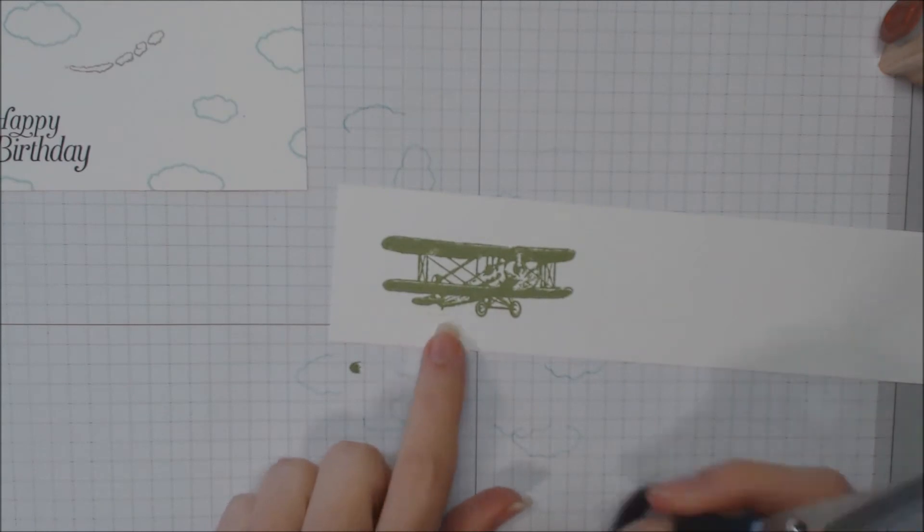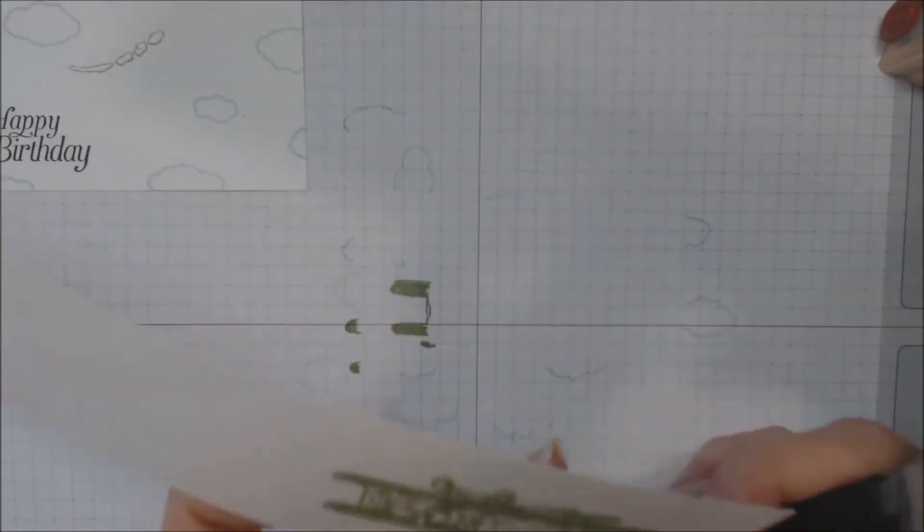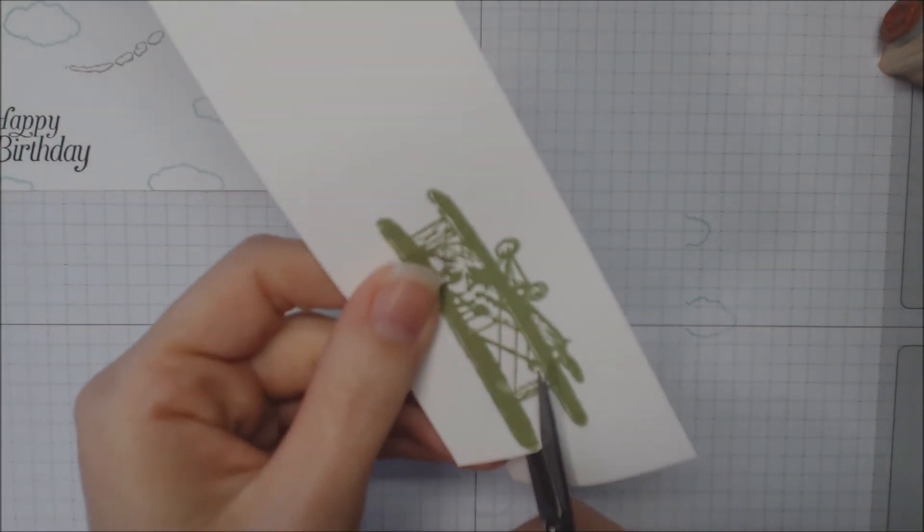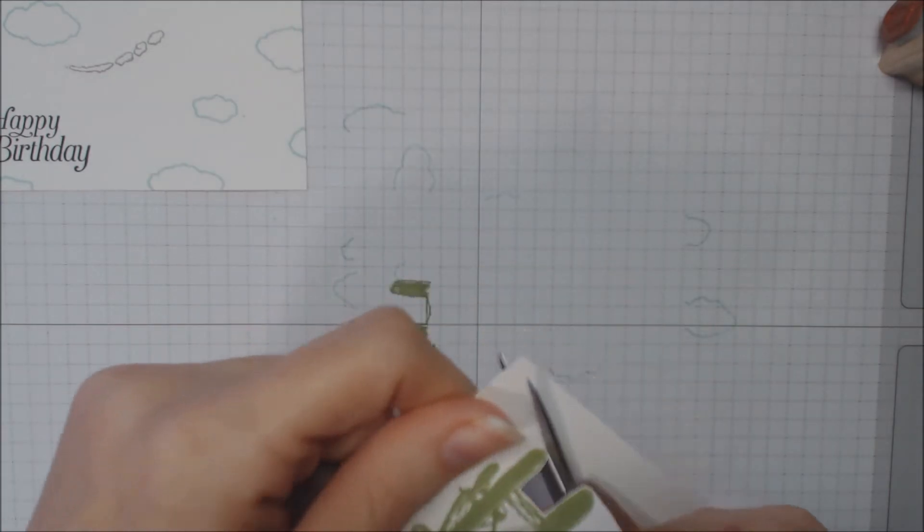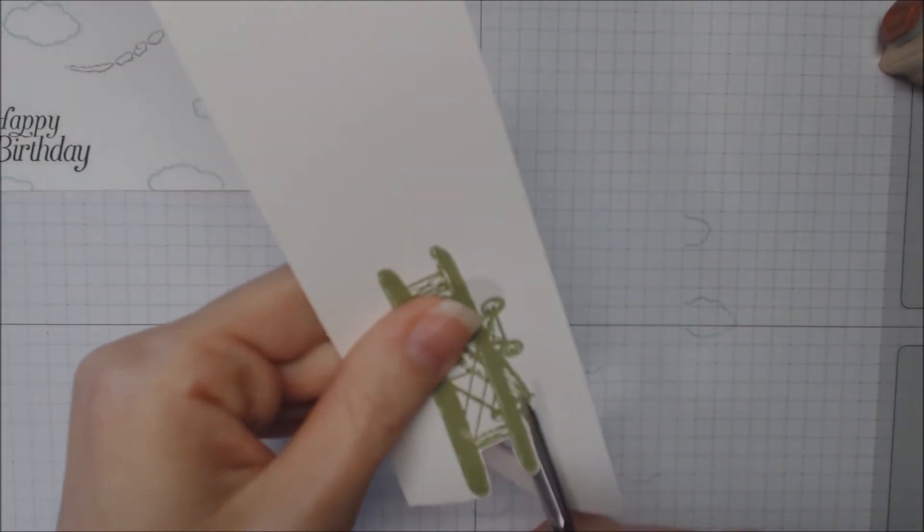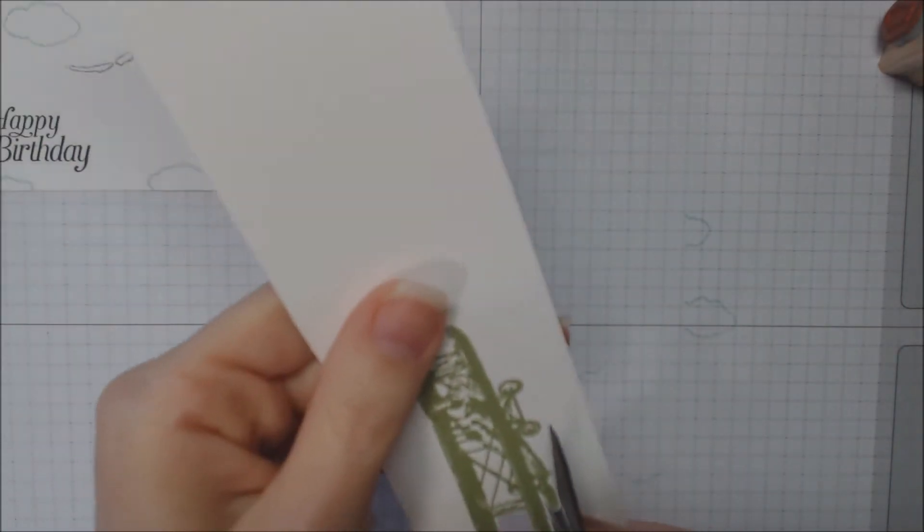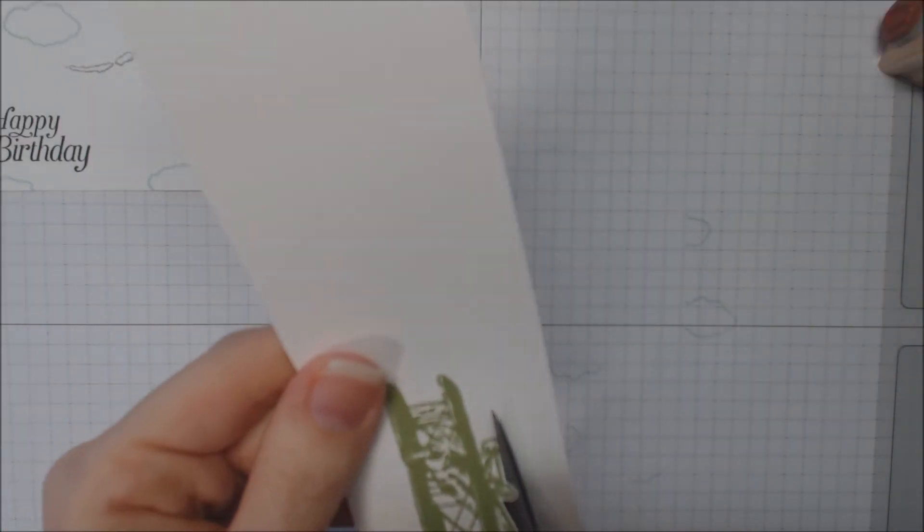We're going to take our airplane image and we're going to cut this out using our paper snips. I'm going to speed this up for you. I just wanted to mention that when you are fussy cutting images out you want to move your paper more than you move your scissors. And here I'm going to leave a little white border all around my little airplane.